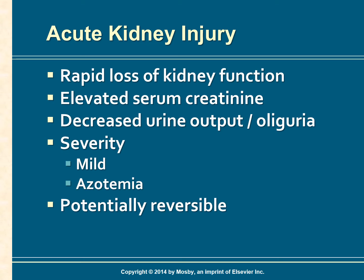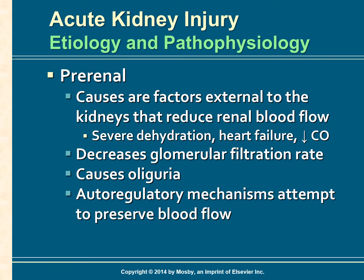Acute kidney injury can develop over hours or days with progressive elevations of blood urea nitrogen, creatinine, and potassium, with or without a reduction in urine output. Acute kidney injury is potentially reversible. The etiology and pathophysiology of AKI involves three different causes: pre-renal, intra-renal, and post-renal.